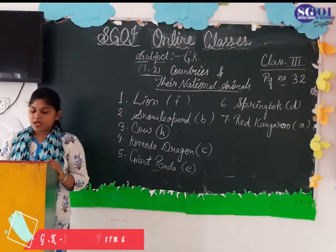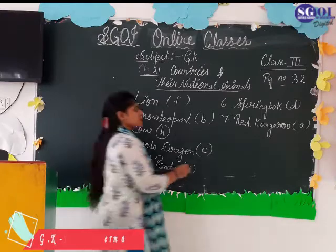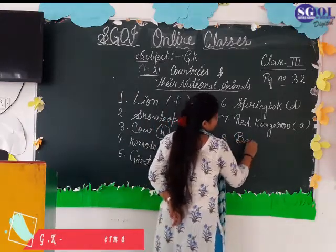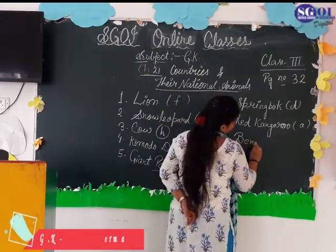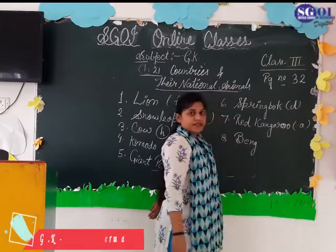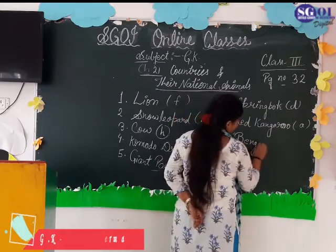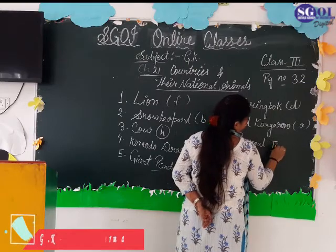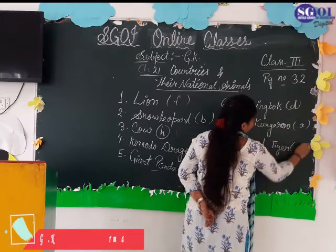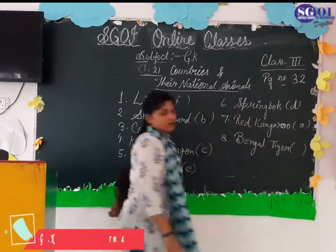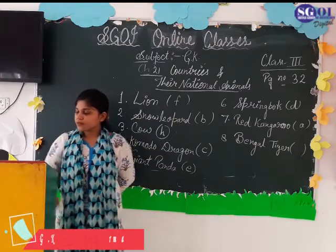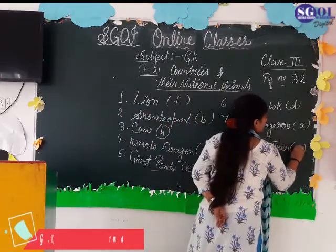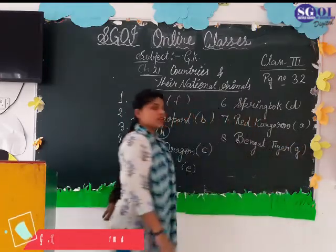Now move to the last one — that is Bengal Tiger. Bengal Tiger is the national animal of which country? India. Match it with G. In the given circle, you have to write G.